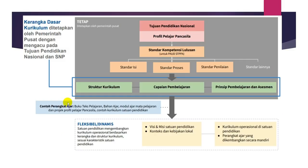Kita lihat struktur kurikulum. Di sini jelas bahwa struktur kurikulum atau kerangka dasar kurikulum itu tidak lepas dari Standar Nasional Pendidikan, yaitu standar kompetensi lulusan, kemudian di-breakdown menjadi standar isi, standar proses, standar penilaian, dan standar-standar yang lain. Ada delapan buah standar, namun yang terkait langsung dengan kurikulum ini ada empat: yaitu SKL, standar isi, proses, dan standar penilaian.